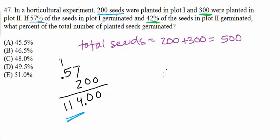Now let's do the same thing for plot 2. So this time we have 42% so we're going to multiply 0.42 by 300. So again I'm just going to bring these zeros down. 3 times 2 is 6, 3 times 4 is 12 and I'm going to move my decimal point 2 places to the left. So this here is our total number that germinated from plot 2.